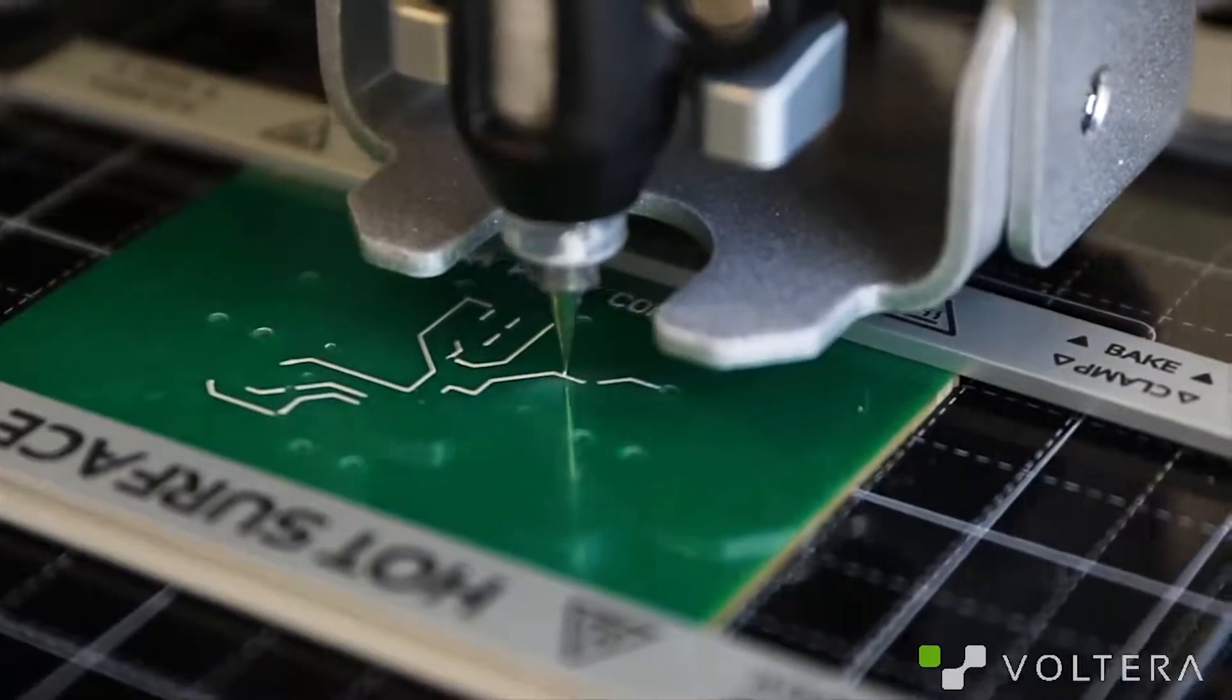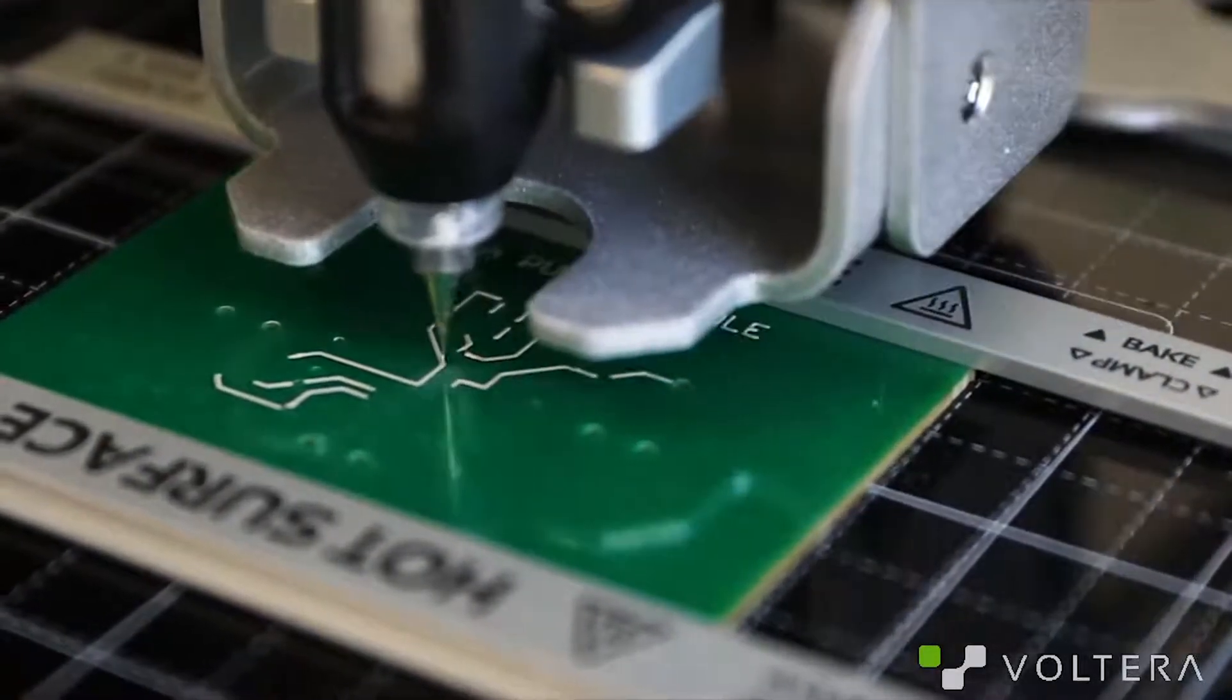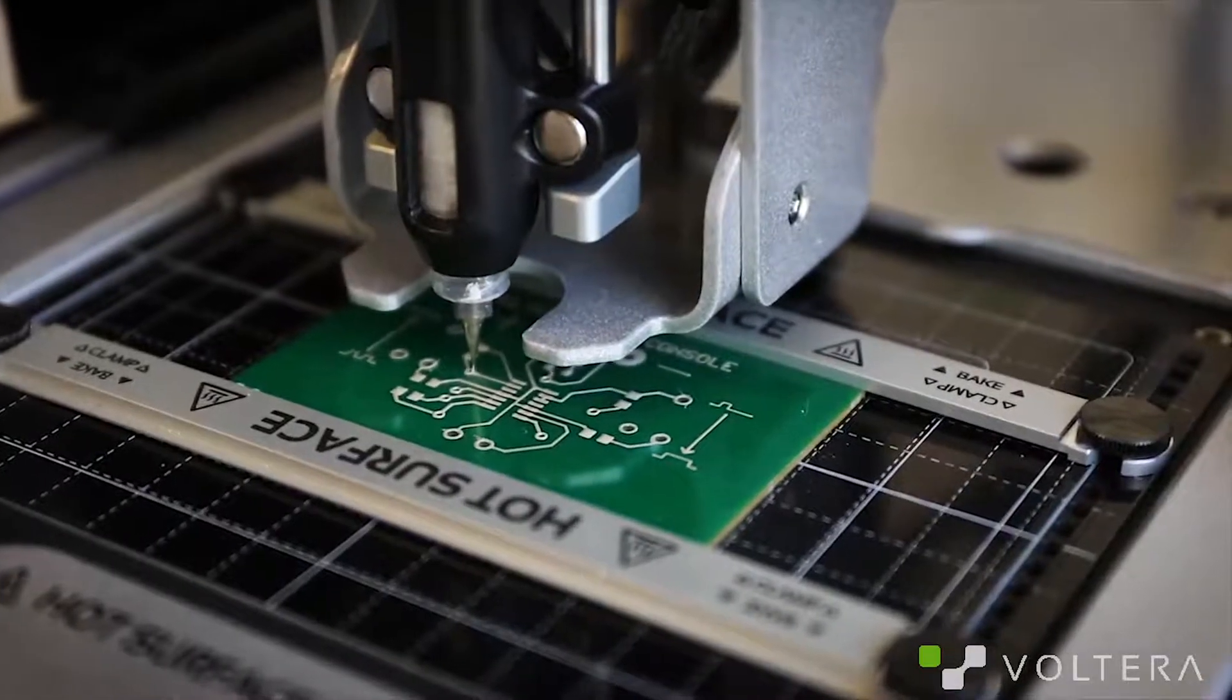If you find a mistake on the board, you can easily reprint it using selective printing. This is a great feature for design modification and rework.